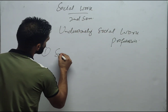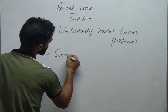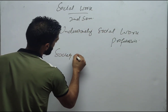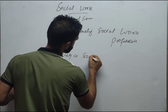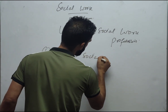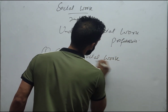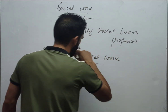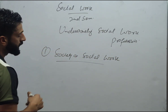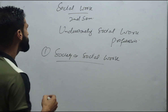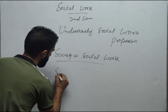We have three units: Critics of Social Work, Philosophy of Social Work Profession, and Social Work and Social Sciences.